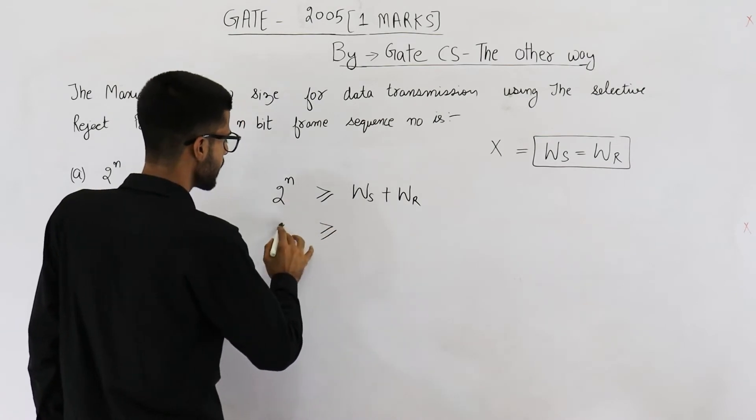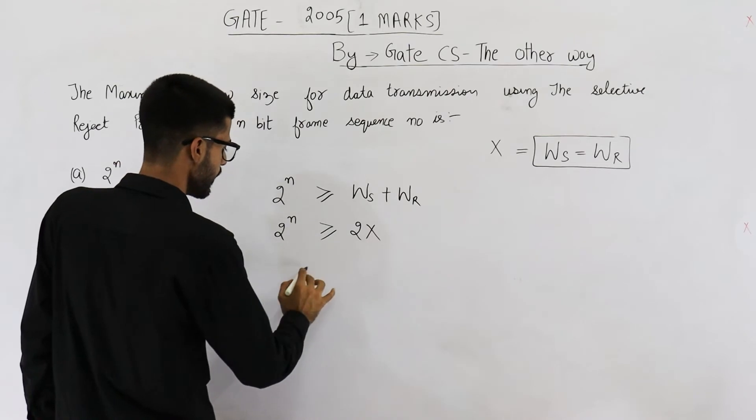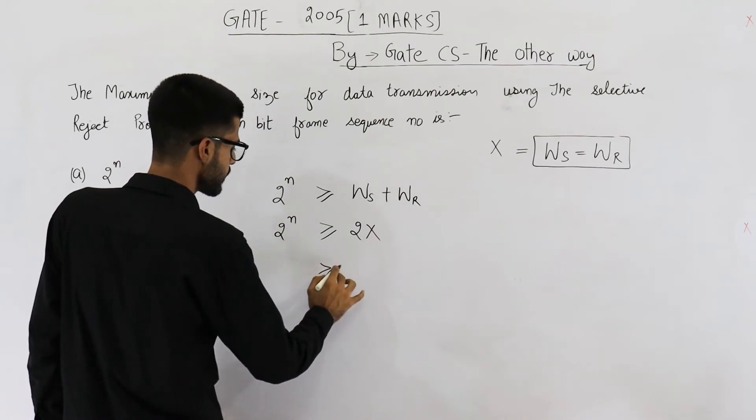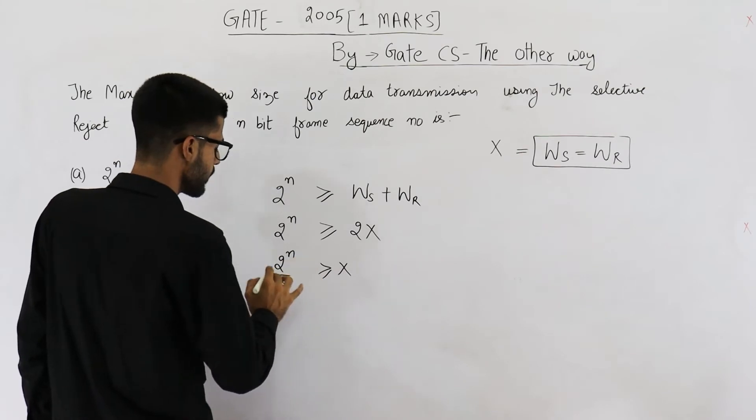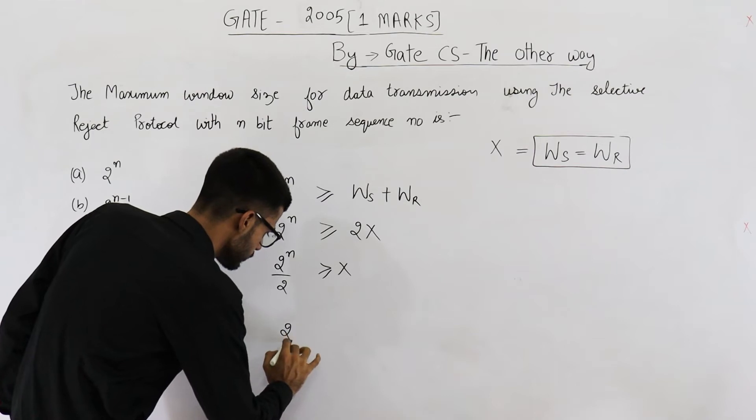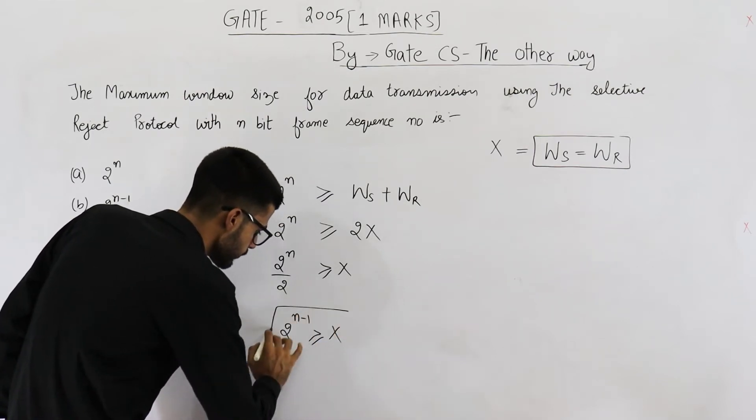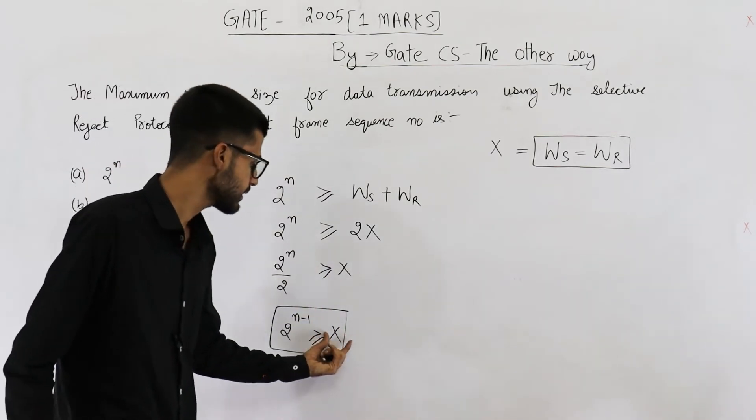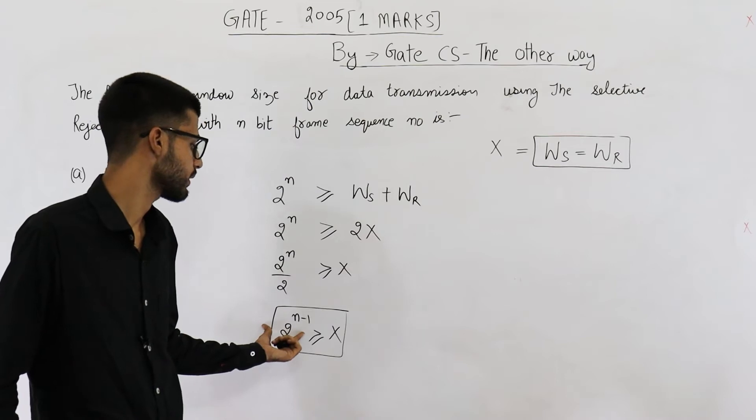That means 2 power n is greater than or equal to 2x, and x is greater than or equal to 2 to the n divided by 2. From here you can see 2 power n minus 1 is greater than or equal to x.